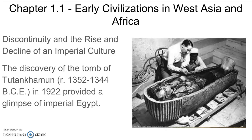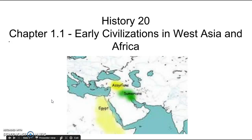The discovery of the tomb of Tutankhamun in 1922 provided a glimpse of Imperial Egypt. One of the great archaeological discoveries of all time occurred in the 1920s. It was made by an Englishman named Howard Carter, who discovered the tomb of the Egyptian pharaoh Tutankhamun. The fact that his tomb was found intact and undisturbed — as most tombs of pharaohs through the ages were broken into and robbed — gave a real excellent insight into many aspects of ancient Egyptian culture. And that's it for this section.